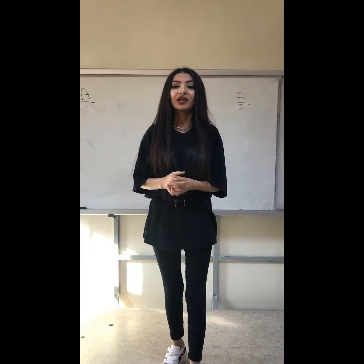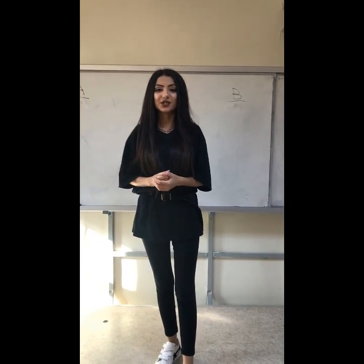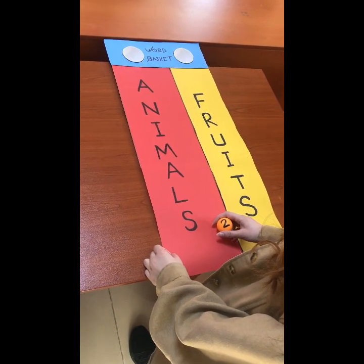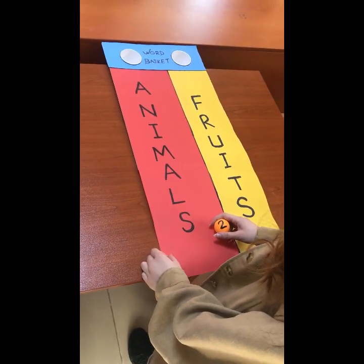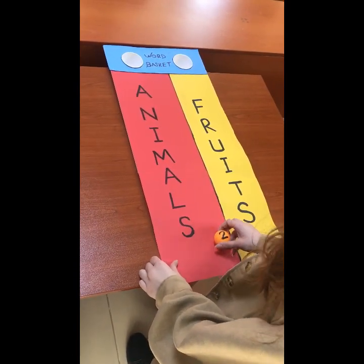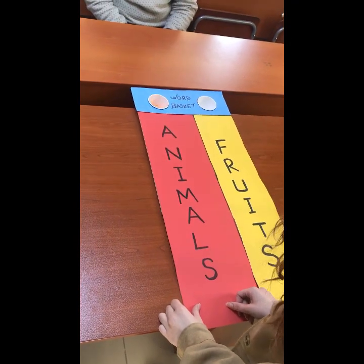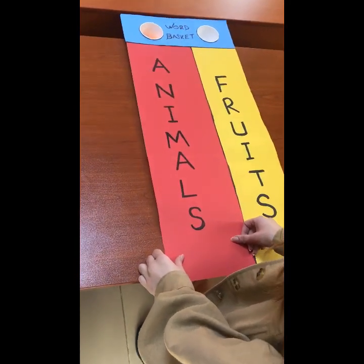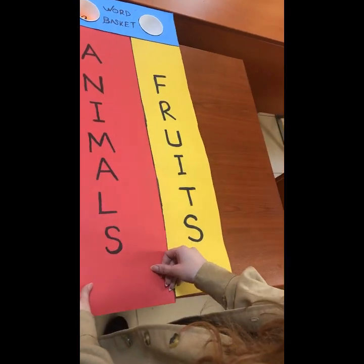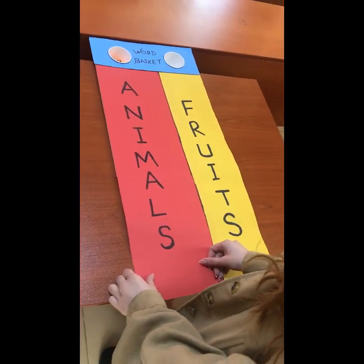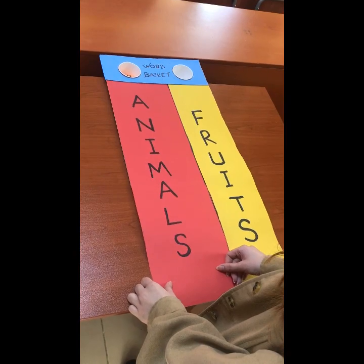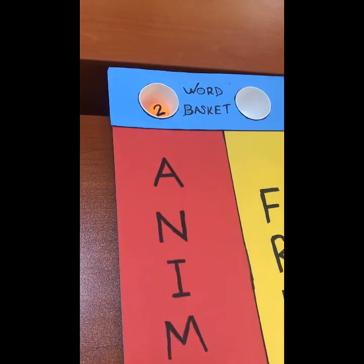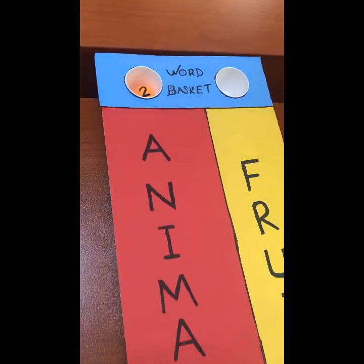We have two students from each group. One student from each group tries to basket the ball into the space, and each space has the name of a unit — Animals and Fruits. Whichever space the ball gets into, the student will say a word from that unit.